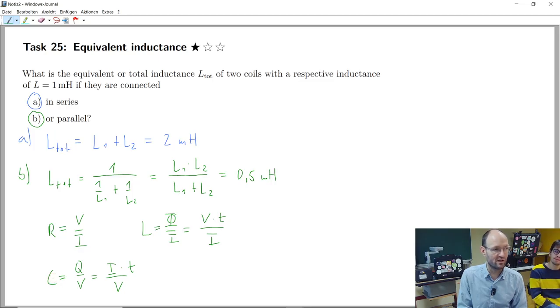So remember last week, if you connect capacitors in series, the total capacitance gets smaller. Here it gets larger. If you connect capacitors in parallel, total capacitance gets larger. Here total inductance gets smaller once again.